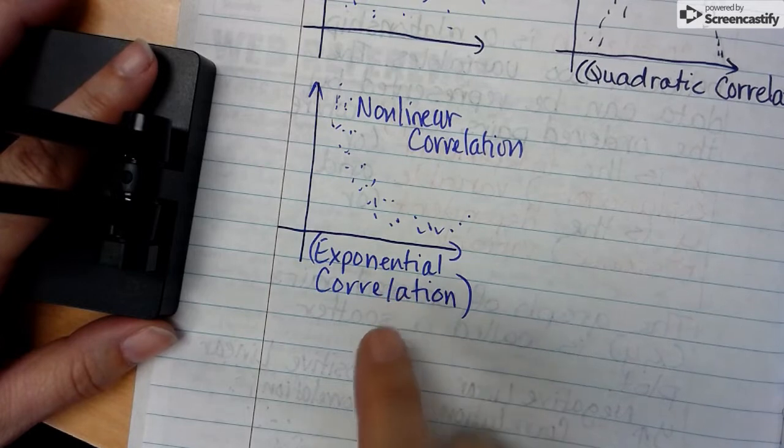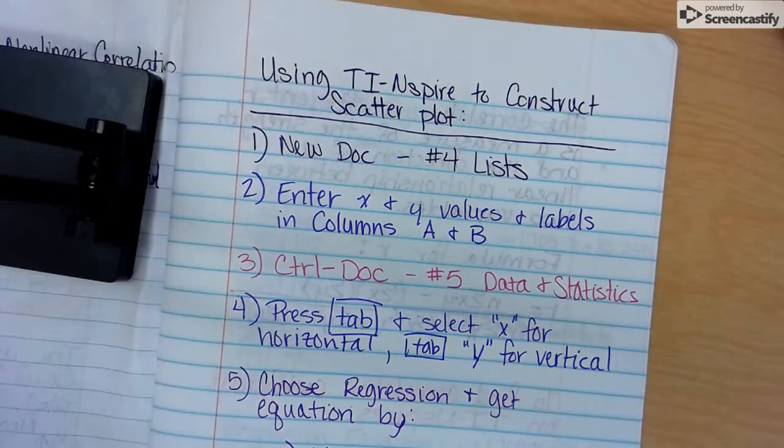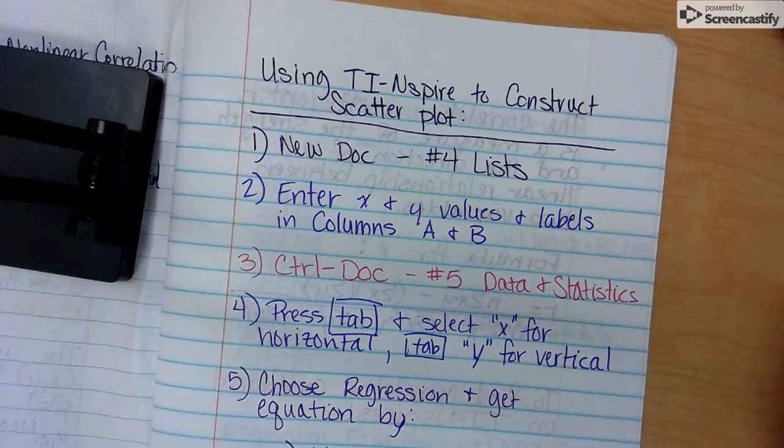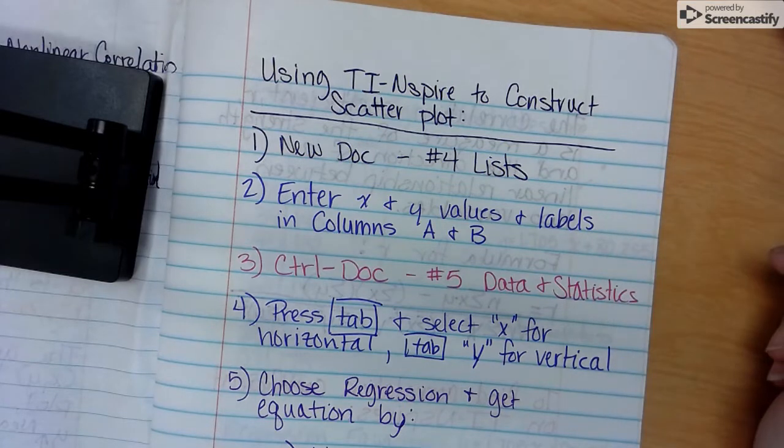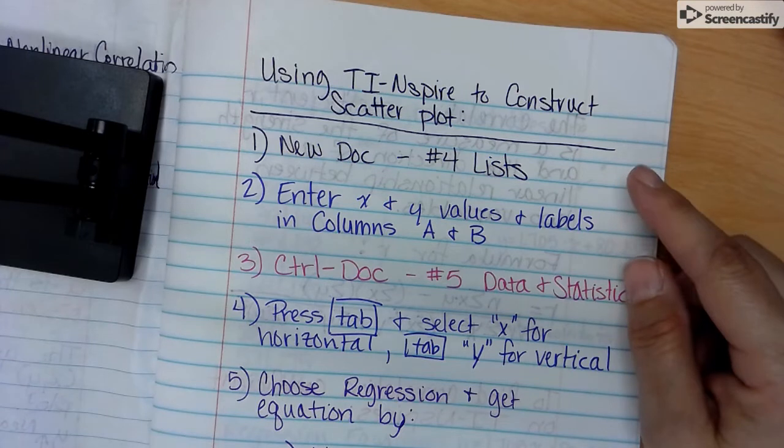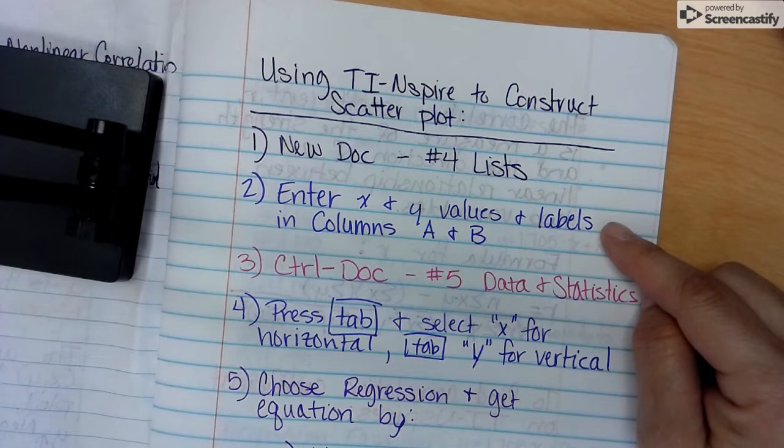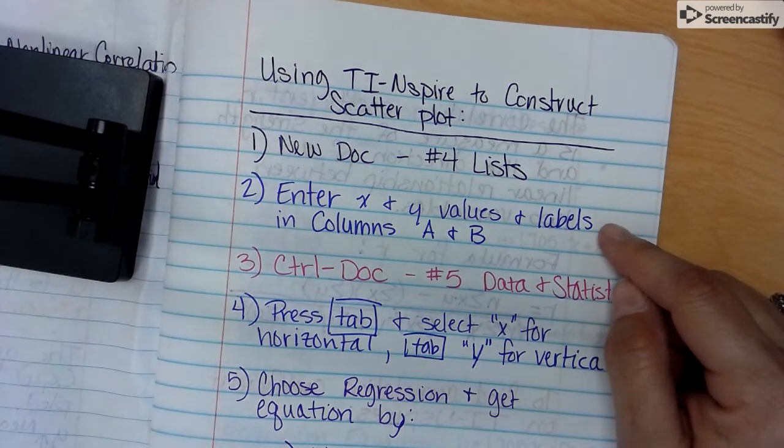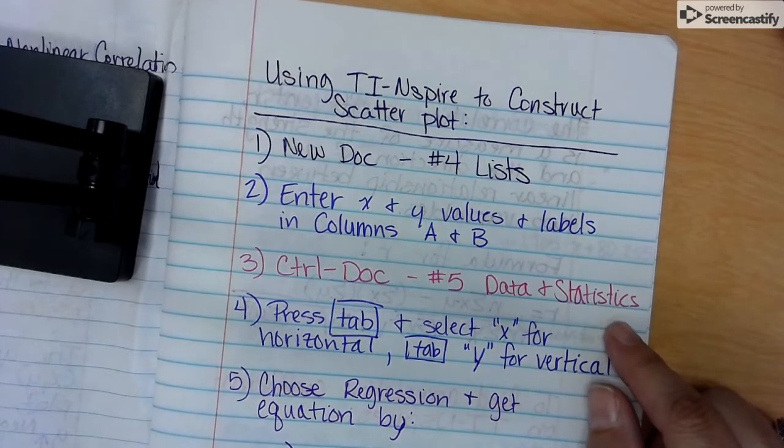On our calculators there are different options for exponential and quadratic. Here are the steps for using the TI-Inspire to construct a scatterplot. They're similar to the ones we use to find mean and standard deviation. We're going to go to New Document, pick number 4 List, and put in our values for x and y in columns A and B. We do need to label each column as x and y, or it could be Age and Blood Pressure or whatever you want, but it does have to have labels.